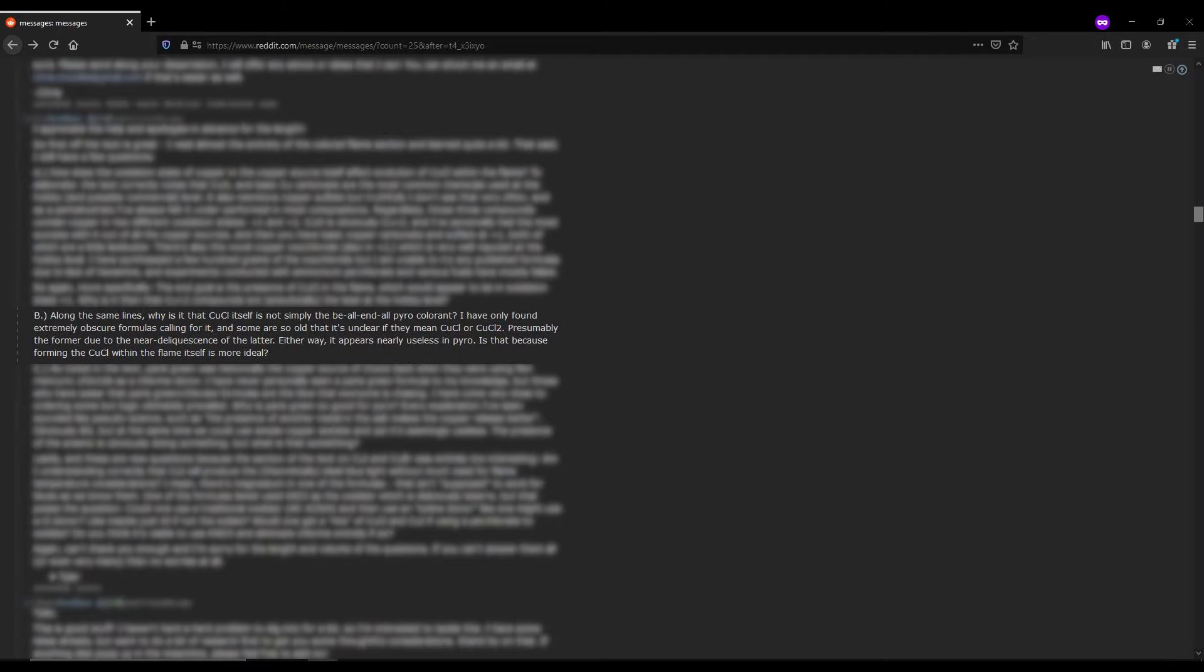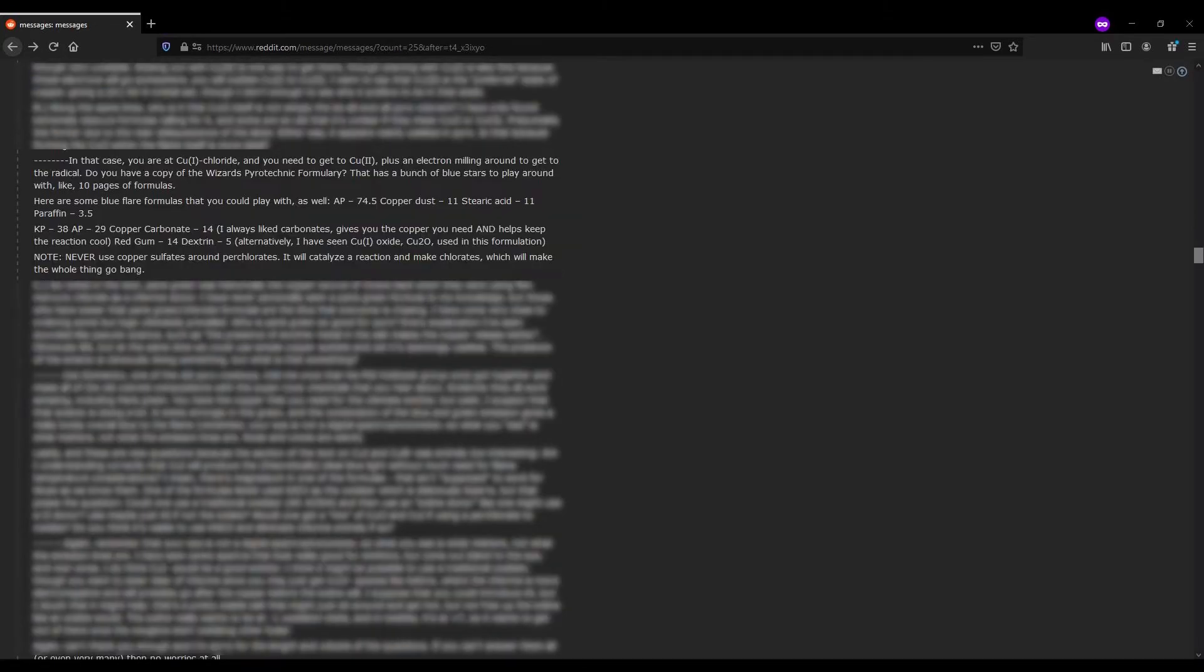Okay, next question. If the color blue is best produced by the presence of copper and chloride ions in the flame, then how come copper one chloride, CuCl, is not the be all end all blue colorant? The answer was again, it's not that simple, it's about the production of copper radicals in the flame with an extra electron milling around, and okay, I'm getting a little over my own head here so let's skip to question three.